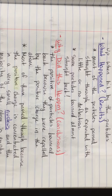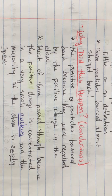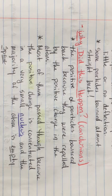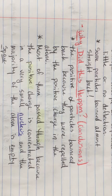Why did some of these particles bounce back at such different angles? The positive alpha particles bounced back because they were being repelled by the positive charge in the atom. But in Thomson's model, that charge was far too diffuse to actually repel the alpha particles. So if there is enough charge concentrated to repel these positive alpha particles, it means that charge is concentrated in a very small part of the atom — and we call that the nucleus. The rest of the atom surrounding the nucleus, where the electrons are, is just empty space.